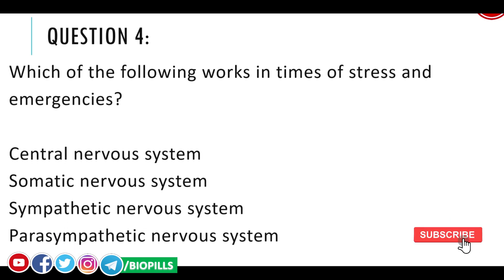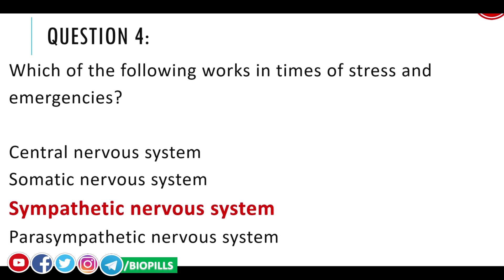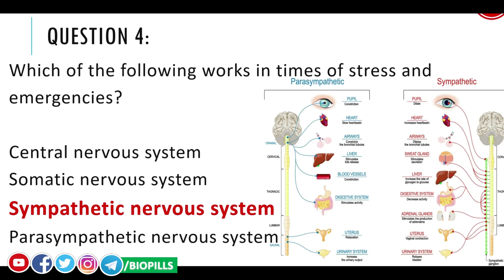Question number four: which of the following works during times of stress and emergencies? Central nervous system, somatic nervous system, or sympathetic nervous system? The answer is the sympathetic nervous system. We have the autonomic nervous system, made up of sympathetic and parasympathetic — sympathetic is active during stress, while parasympathetic works during rest.